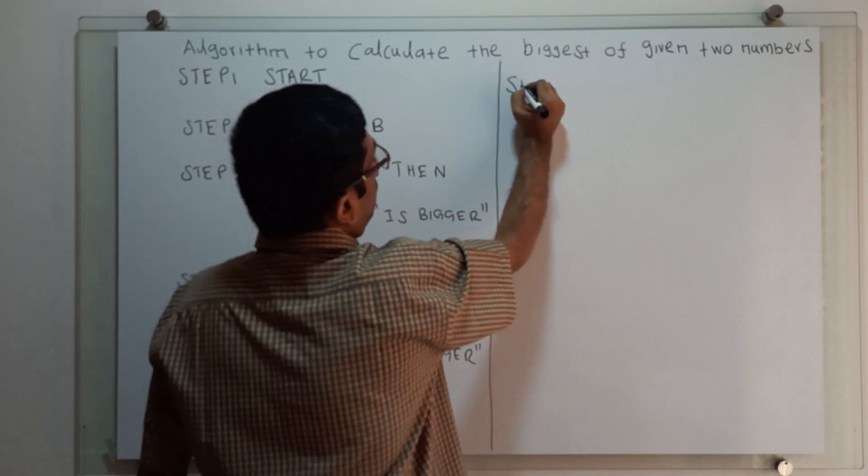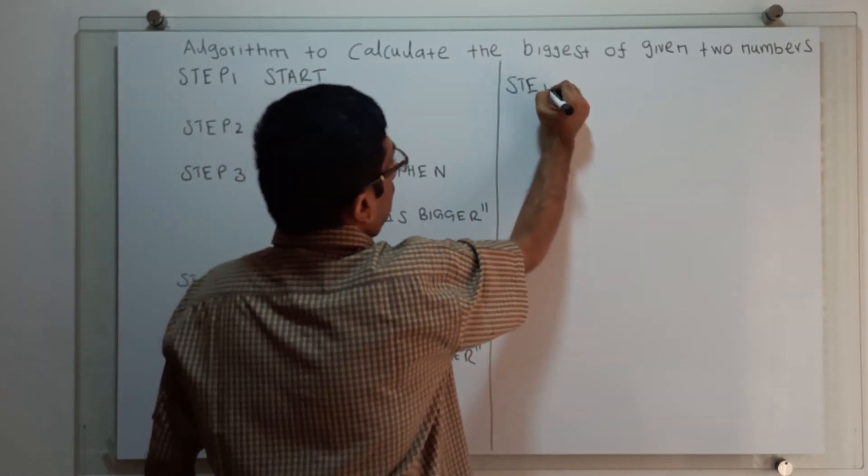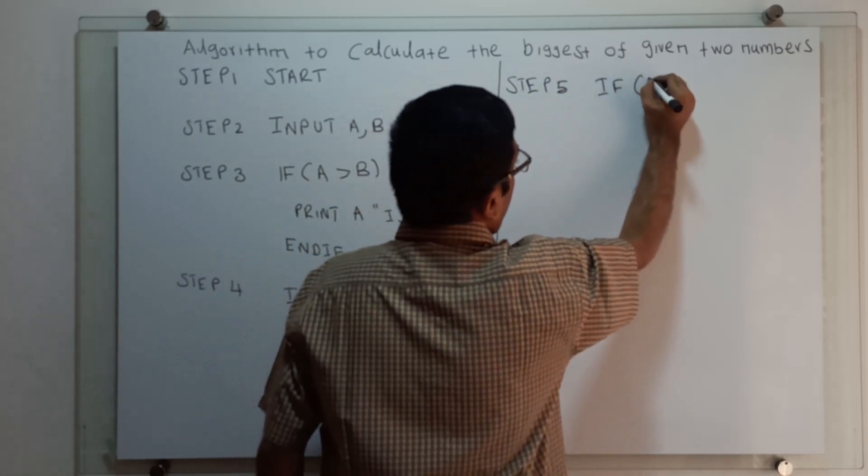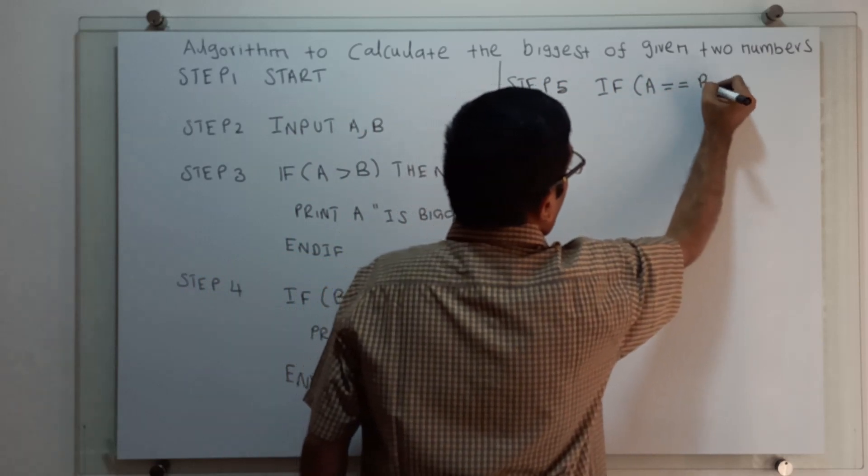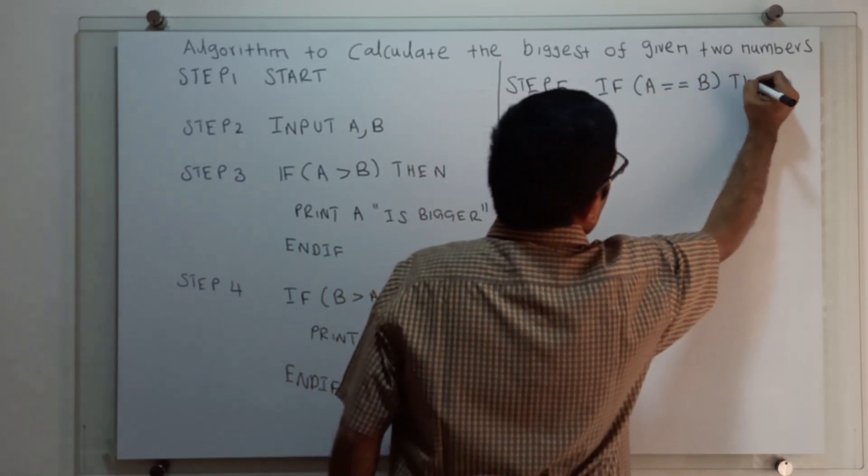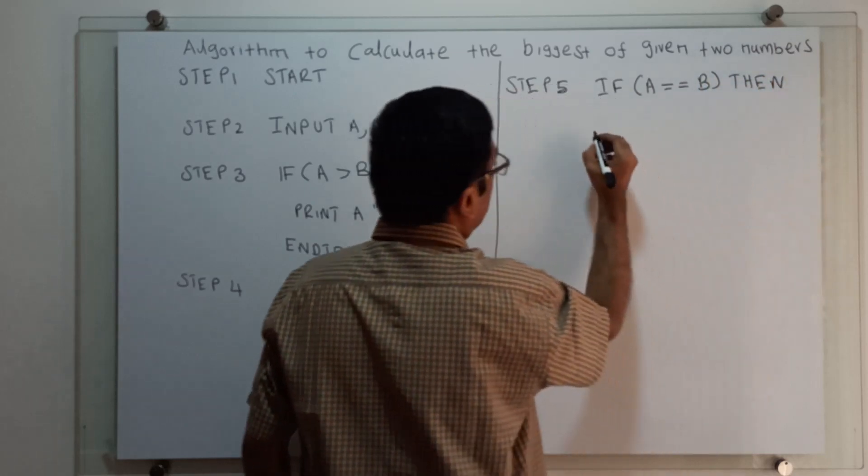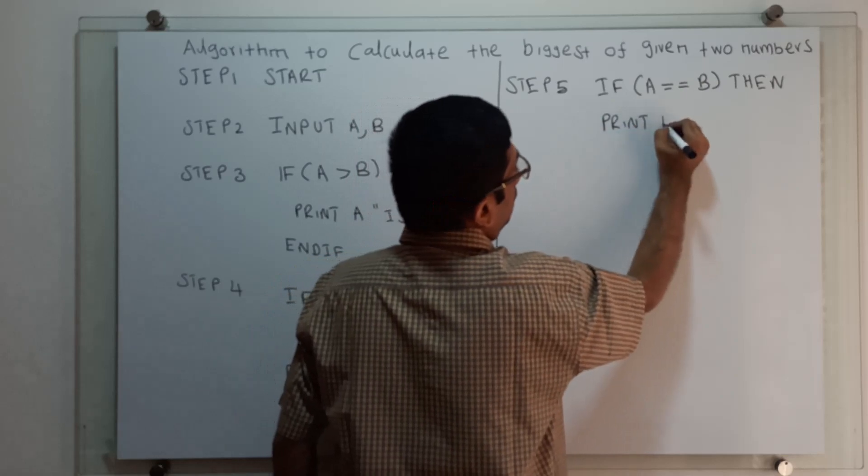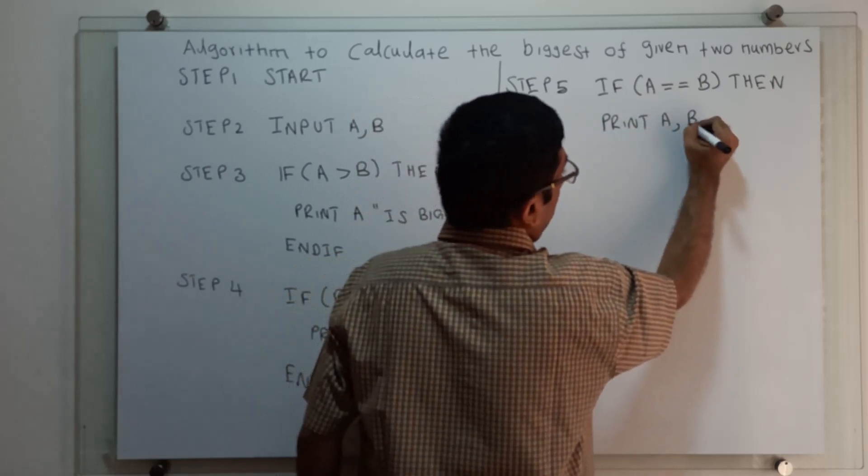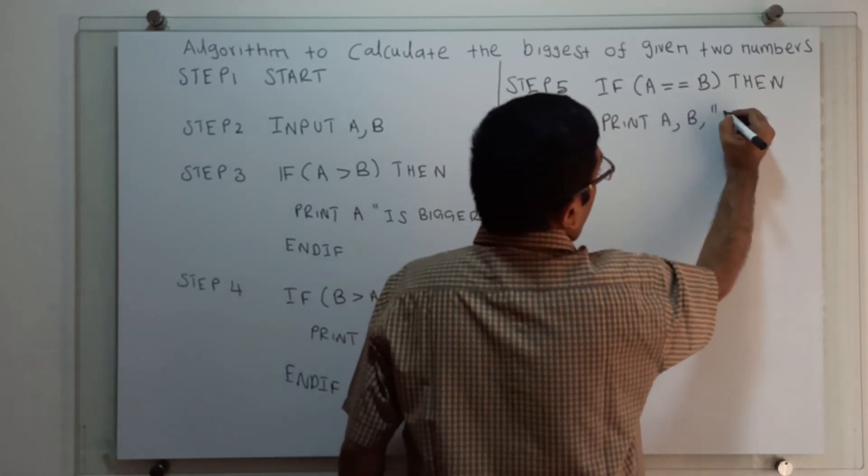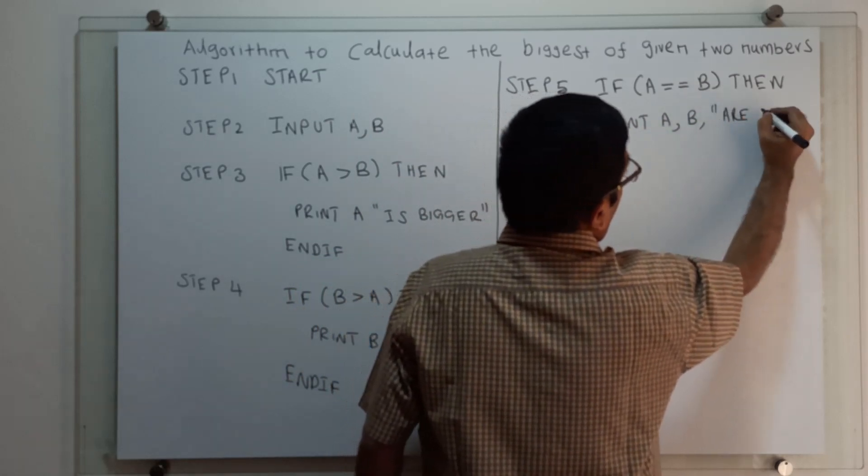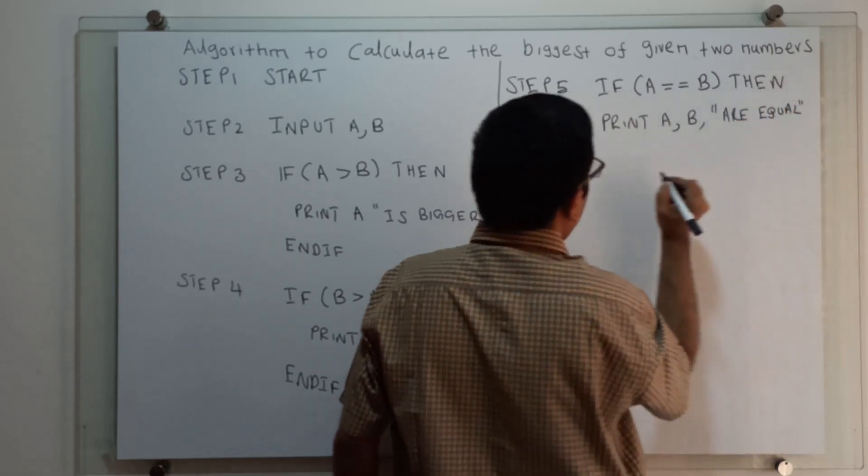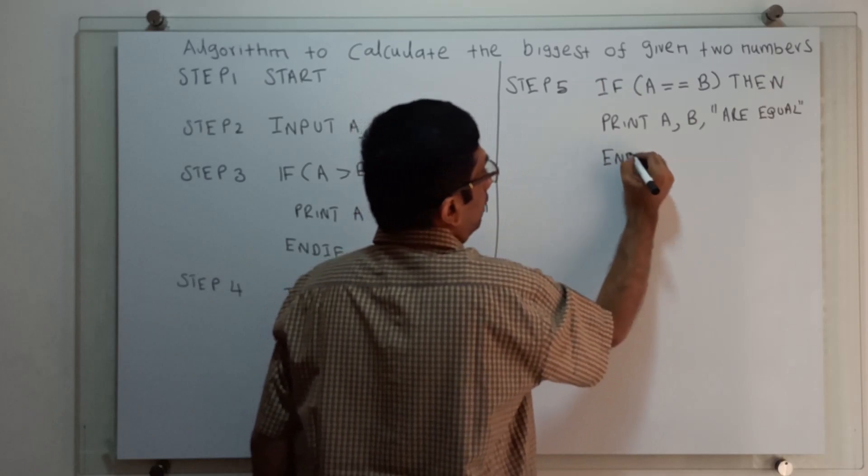Step 5: If A equal to B, then print 'A and B are equal.' End if.